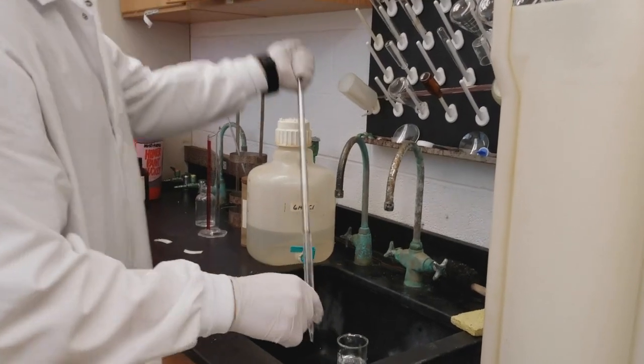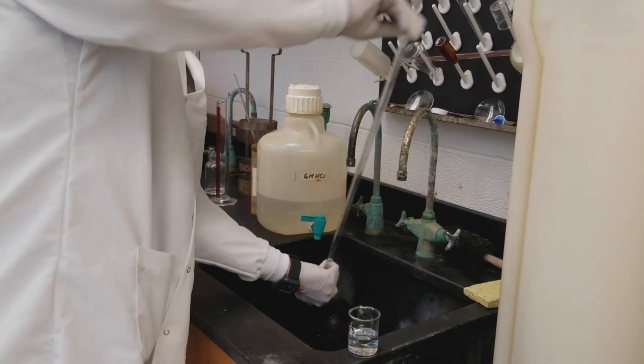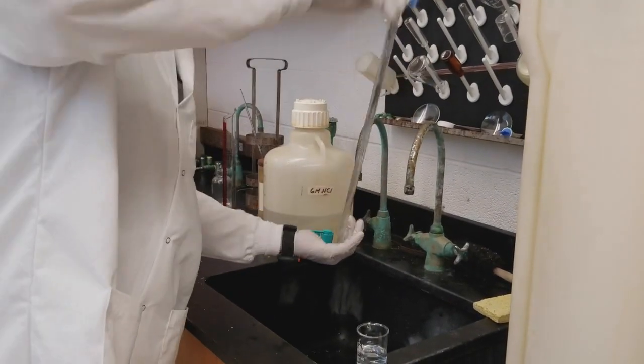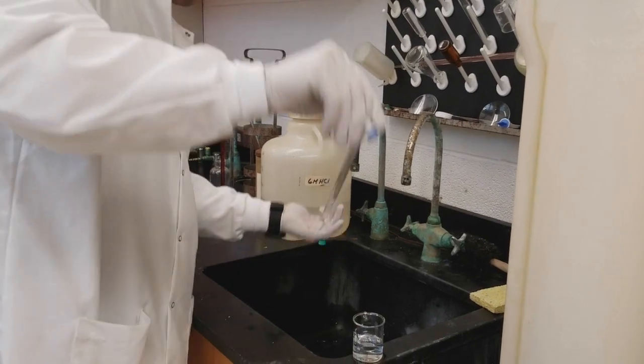Put a gloved thumb on top of the burette, hold it on both sides, invert it, swirl it, and make sure you're getting that HCl solution all the way around the inside of the burette.